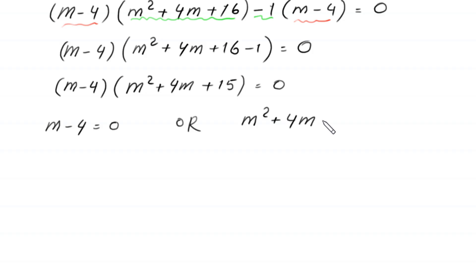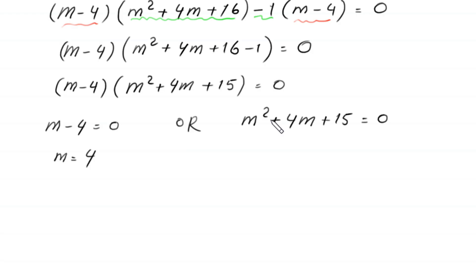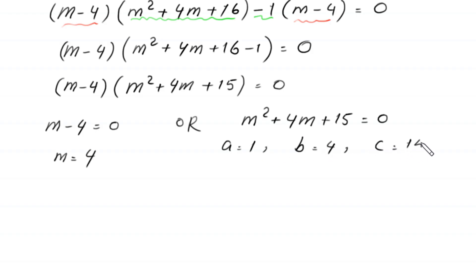Either m minus 4 equals 0, giving m equals 4, or m squared plus 4m plus 15 equals 0. This quadratic is not factorable, so we solve it using the quadratic formula, where a equals 1, b equals 4, and c equals 15.